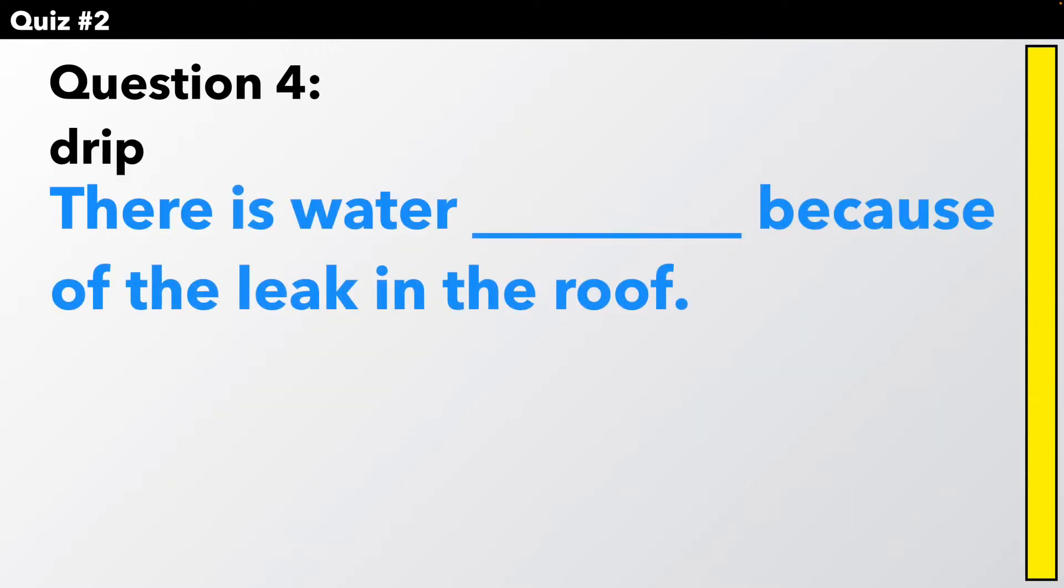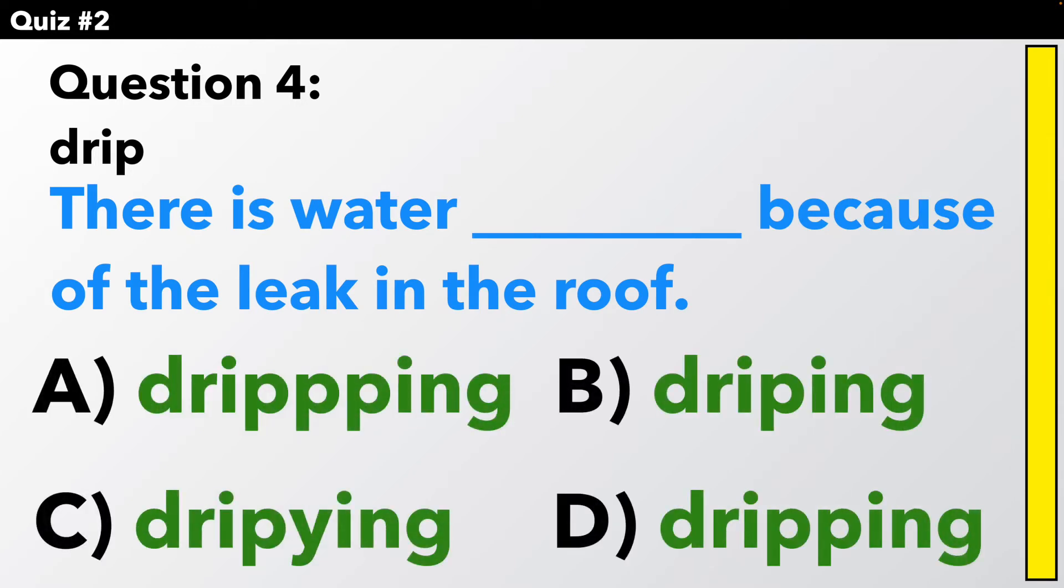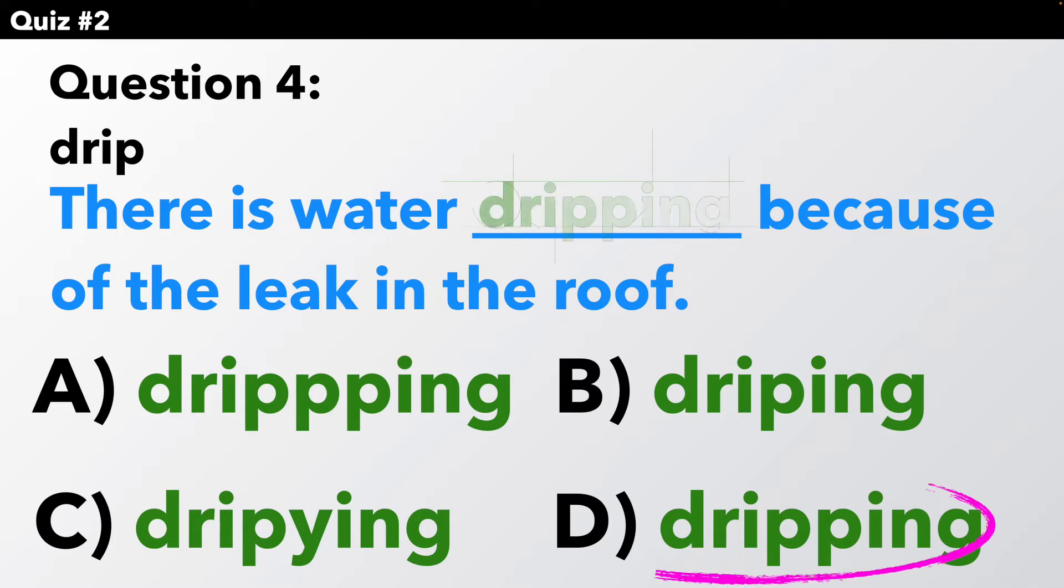Question four. Drip. There is water dripping because of the leak in the roof. How do we spell dripping? We have to double the P at the end of drip. So it is D-R-I-P-P-I-N-G.